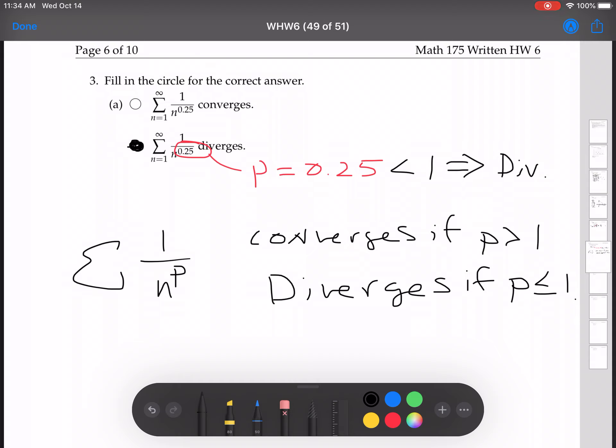The reason for this is because, remember, the series converges or diverges as the improper integral, whether or not the improper integral does. And the improper integral, 1 to infinity, 1 over n to the 0.25.